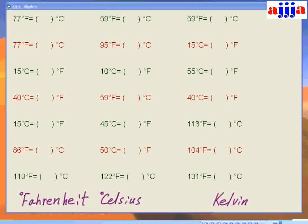Let's try this one — 104°F. Minus 32 gives us 2 and 7 — seventy-two. Seventy-two divided by nine is 8. Eight times five is forty. So 104°F equals 40°C. So easy!